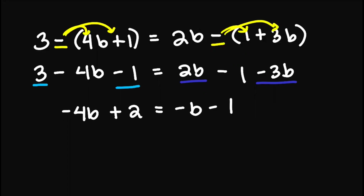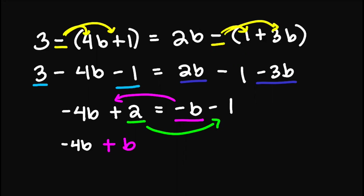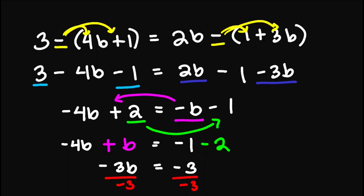Now from here, we can move the terms. So we move negative b to the left side and move 2 to the right side. So this becomes negative 4b, change the sign, so that becomes plus b. This is equal to negative 1, change the sign, so it becomes negative 2. Simplifying, this is negative 3b equals negative 3. We divide negative 3 on both sides to cancel this one, and we obtain b equals 1. And this is the answer.